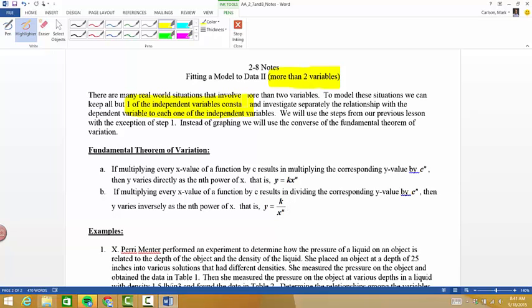So we know from the fundamental theorem of variation that if multiplying an x value of a function by some number we'll call it c results in multiplying the y value by c to the n, well then the y variable varies directly to the nth power of x. In other words, it will be y equals kx to the n.